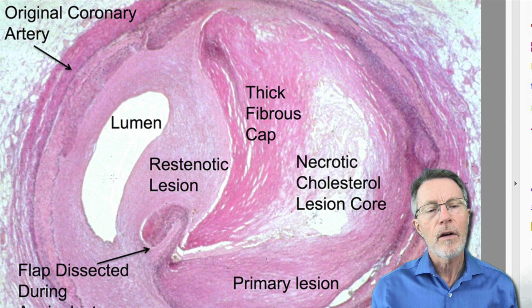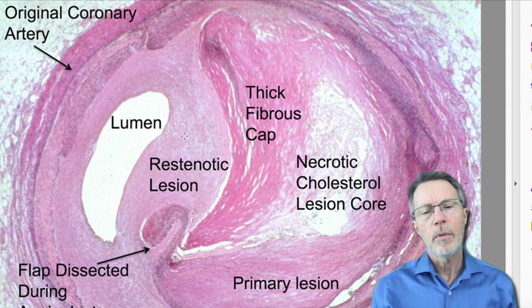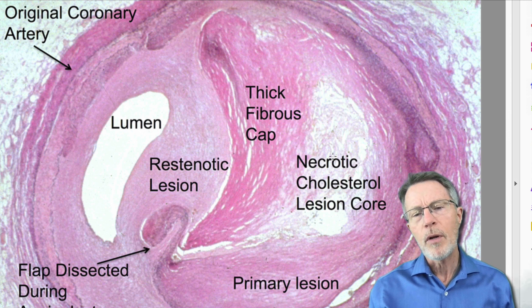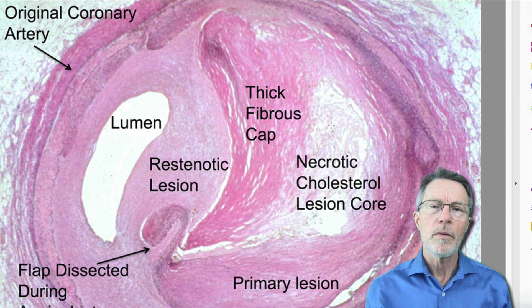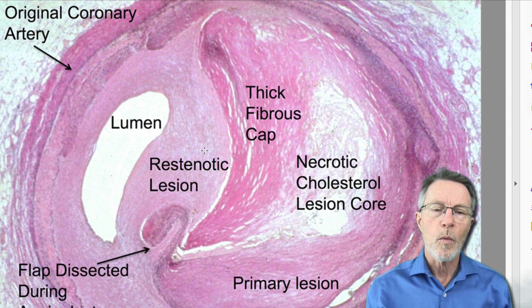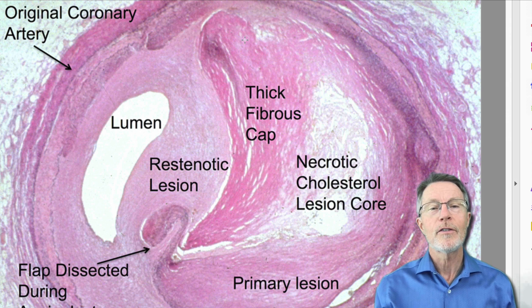Even in an artery that has a lot of lumen left and very little plaque, if that plaque has become necrotic — it's got a necrotic cholesterol lesion core — that liquid is what we call hot plaque. That liquid has been created by this waxy LDL, by release of enzymes by monocytes and neutrophils.